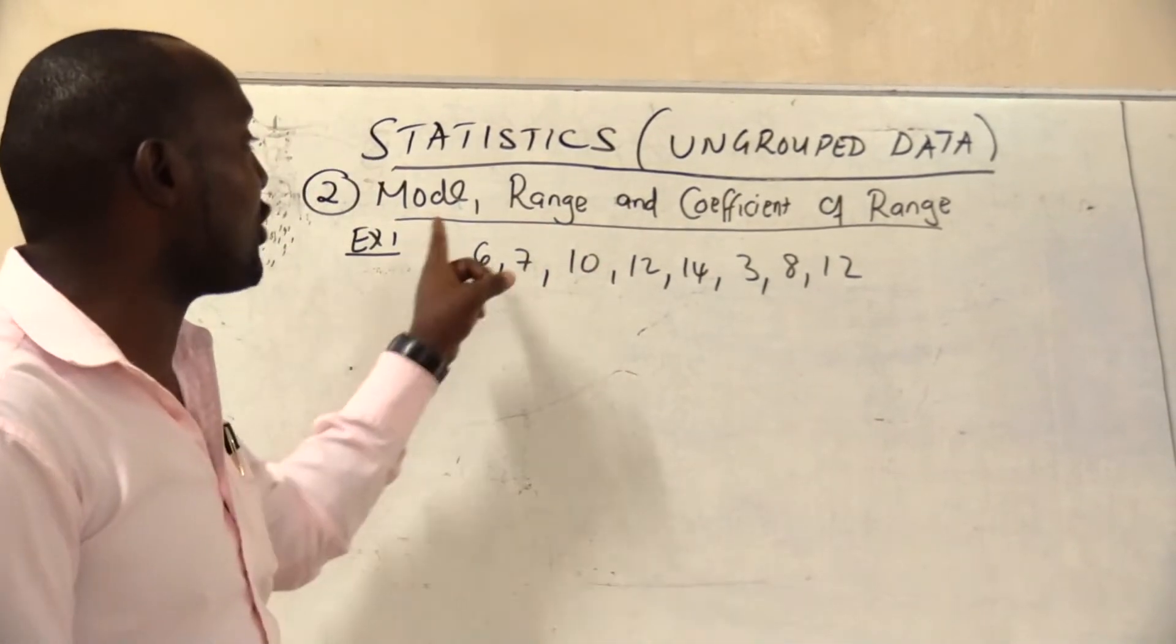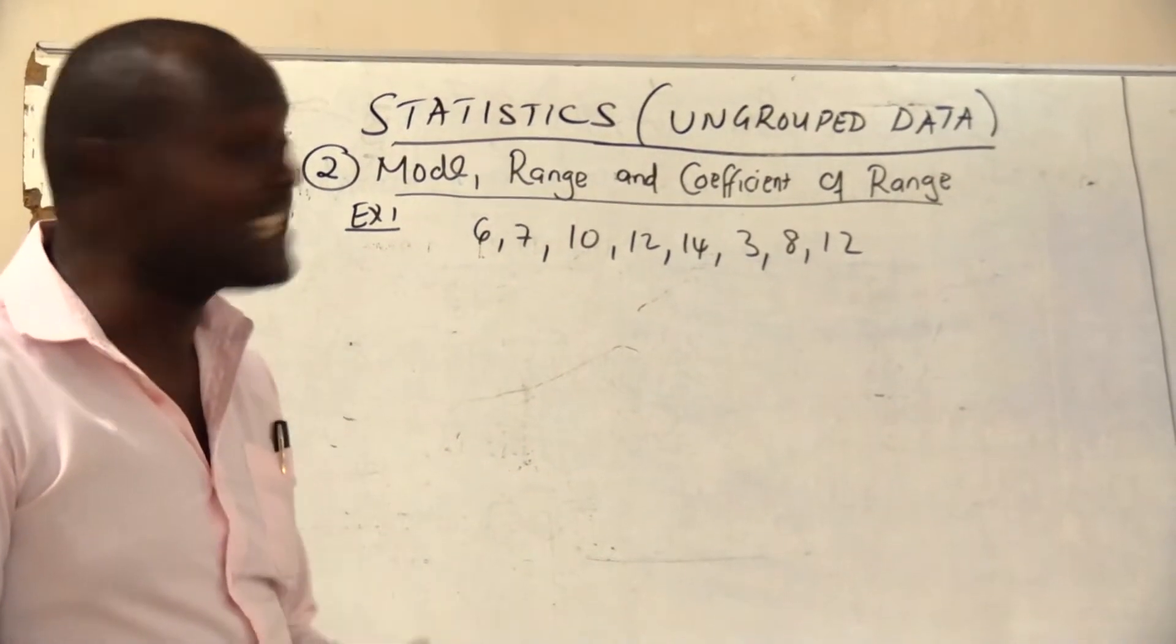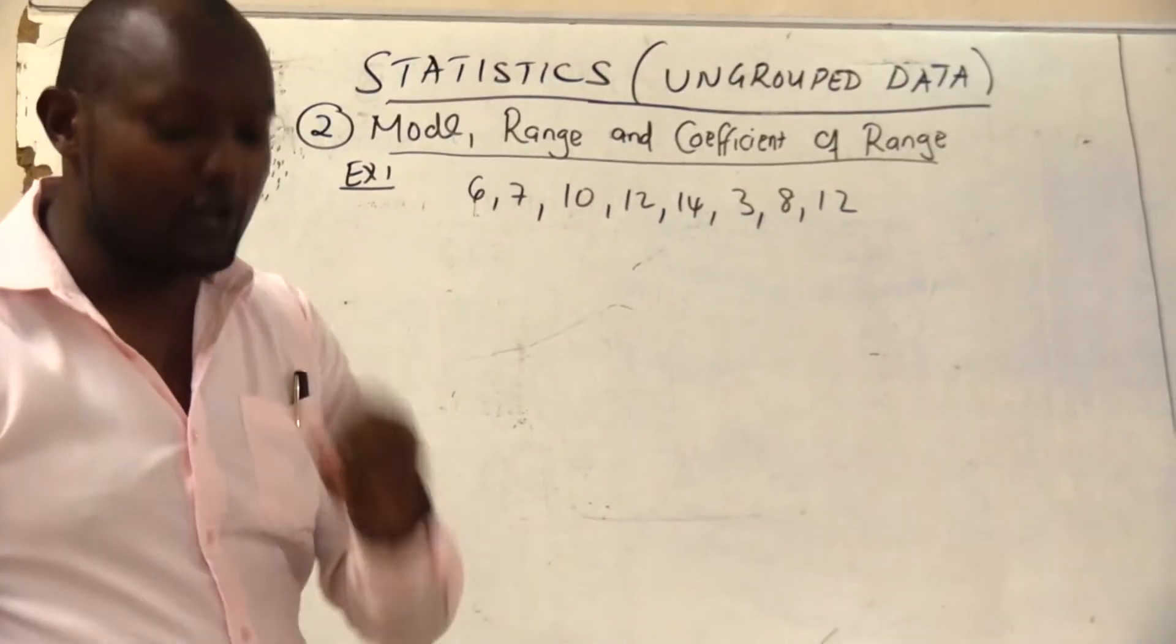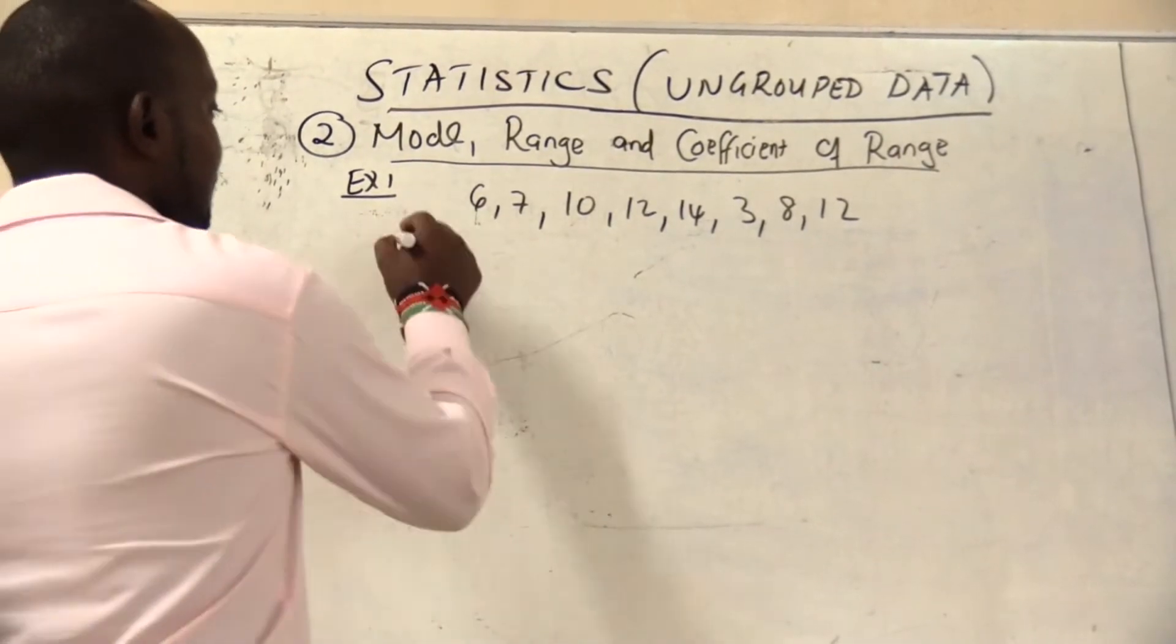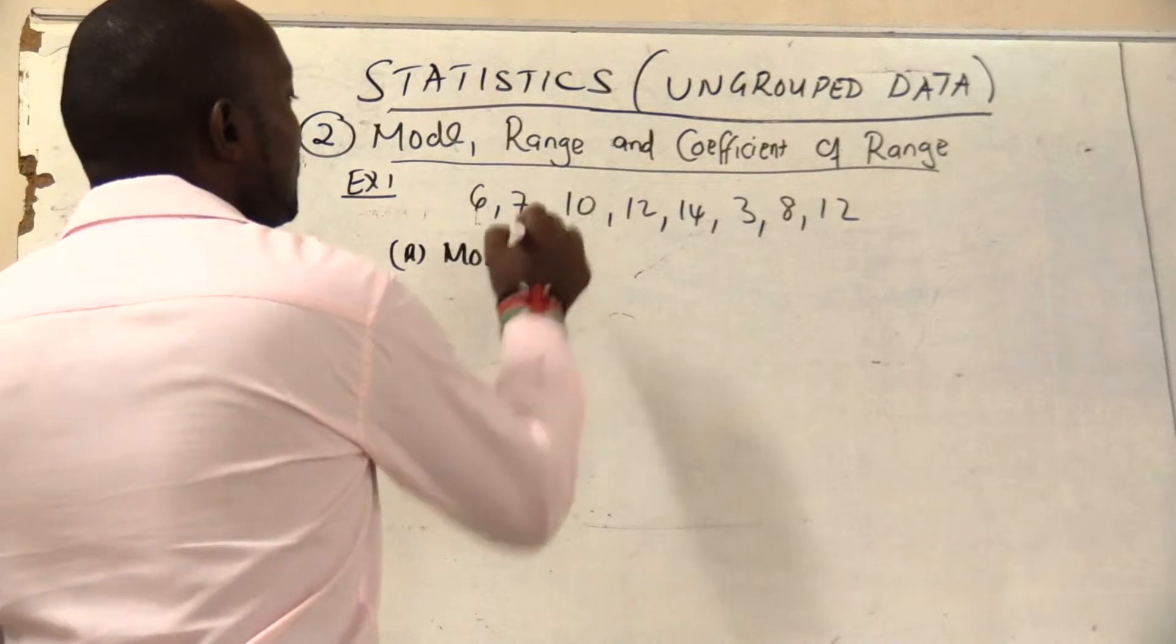I have given my example on mode but we need to understand what is mode. In this case, mode is the most occurring number.